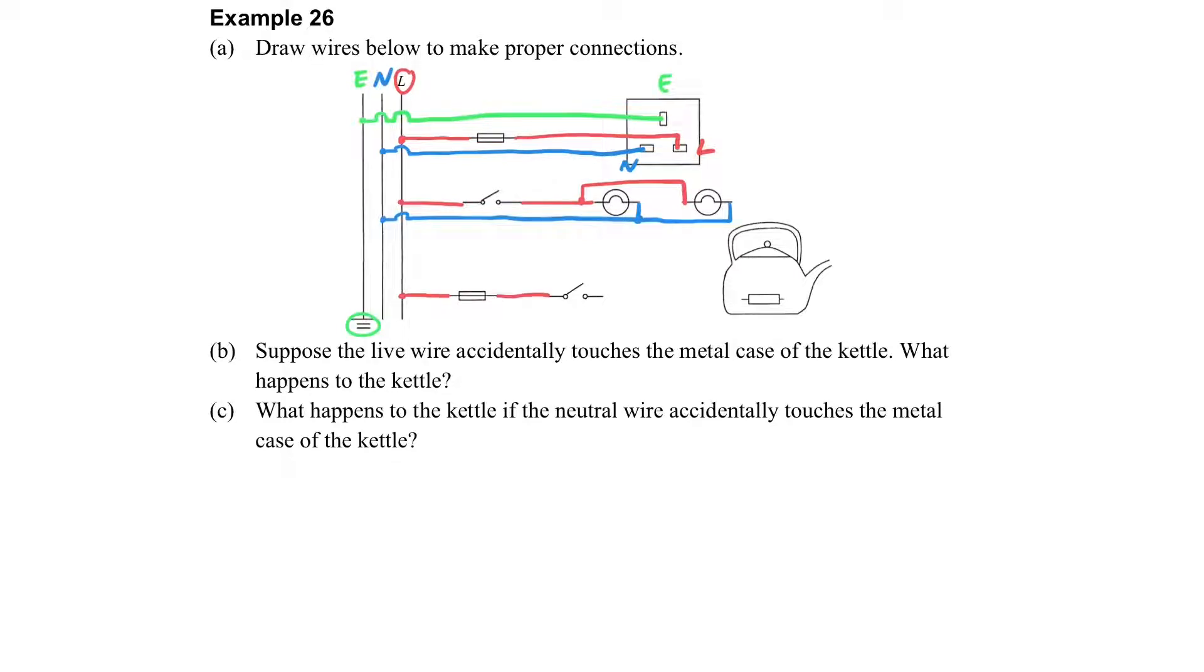And then the last one for the electric kettle. The wire first passes through the fuse and the switch, and then the heating element inside the kettle, and completes the circuit with the neutral wire.